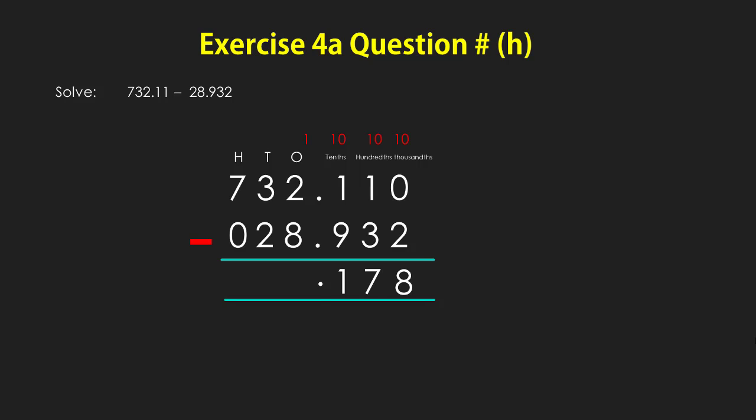Write the decimal point where it is. In the ones column we have 1, and we can't subtract 8 from 1, so we carry 1 from the tens column — now the tens column has 2 and the ones column has 11. Subtracting 8 from 11, we get 3. Subtracting 2 from 2, we get 0 in the tens column. In the hundreds column, subtracting 0 from 7, we get 7. So our answer is 703.178.